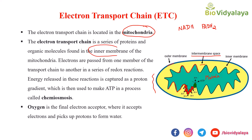These electrons are passed from one member of the transport chain to another in redox reactions, and energy is released. That energy is used to pump protons from the matrix to the intermembrane space. As a result, the intermembrane space becomes more acidic, creating a proton gradient. That proton gradient is then used to make ATP, and that process is known as chemiosmosis.